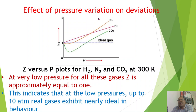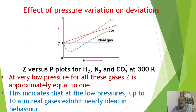This deviation is present in real gases, and we examine how it is affected by pressure variation. Pressure P is taken on the X-axis and compressibility factor Z on the Y-axis. The blue line indicates ideal gas behavior. This is the Z versus P plot for hydrogen, nitrogen, and carbon dioxide at 300 Kelvin.